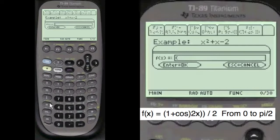Parenthesis, 1 plus cosine 2 times x and close off the main parenthesis divided by 2.